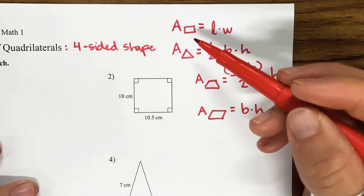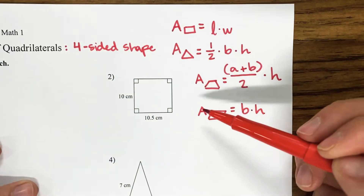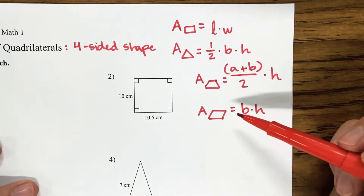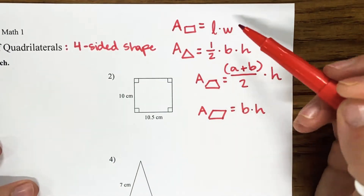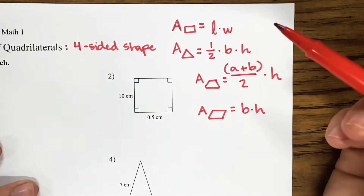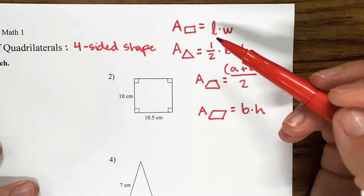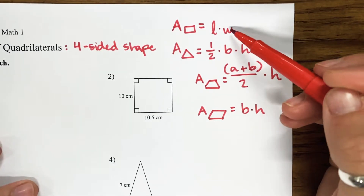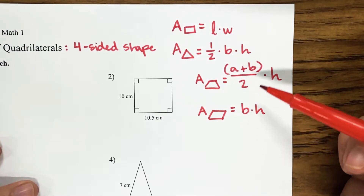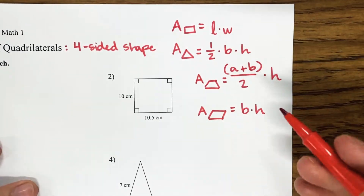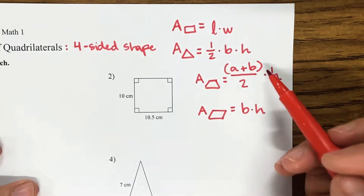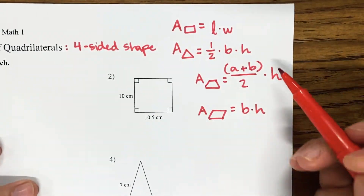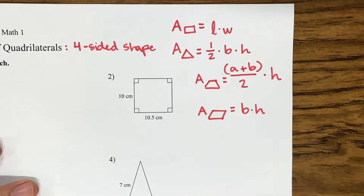The area of a rectangle and a parallelogram are basically the same thing — in fact, they are the same thing. One is just called length and base, the other is width and height, but they are the same. Those are all the area formulas we're going to be using today.